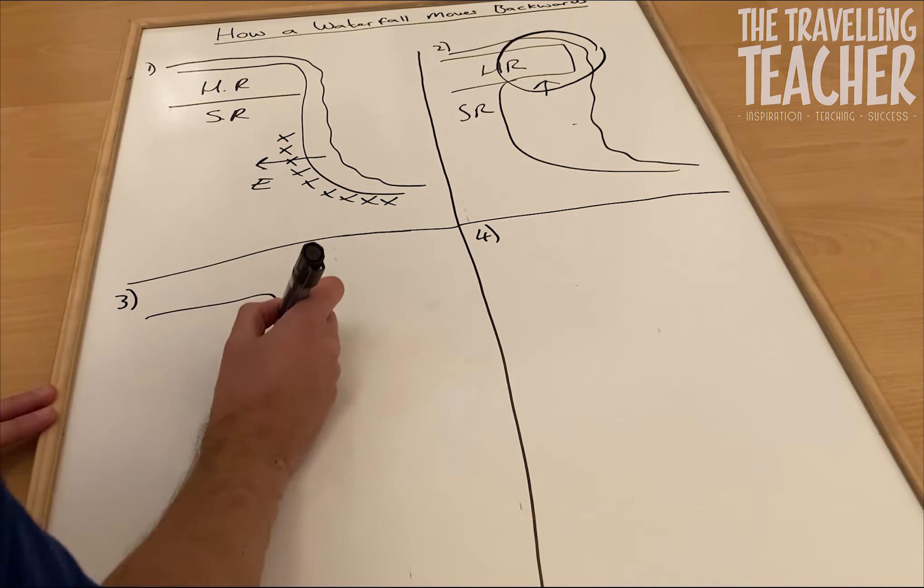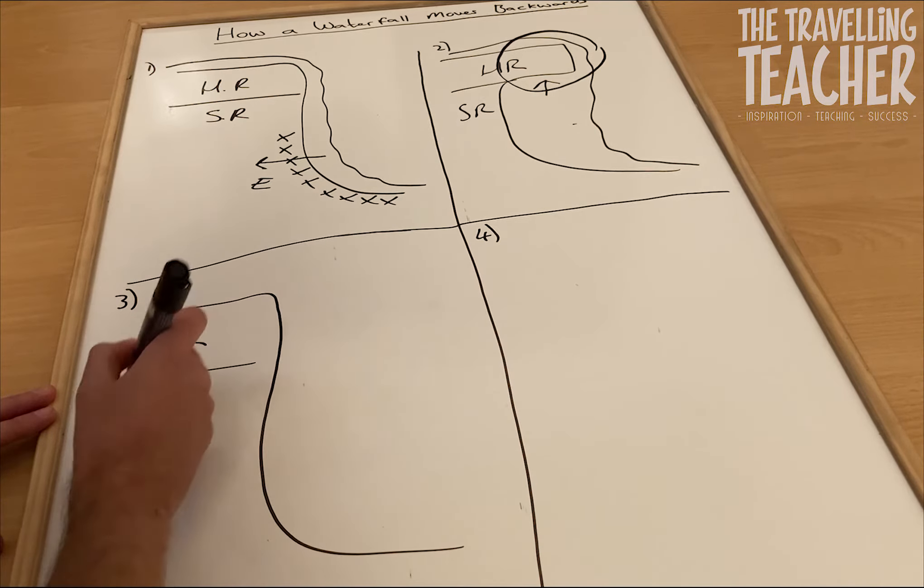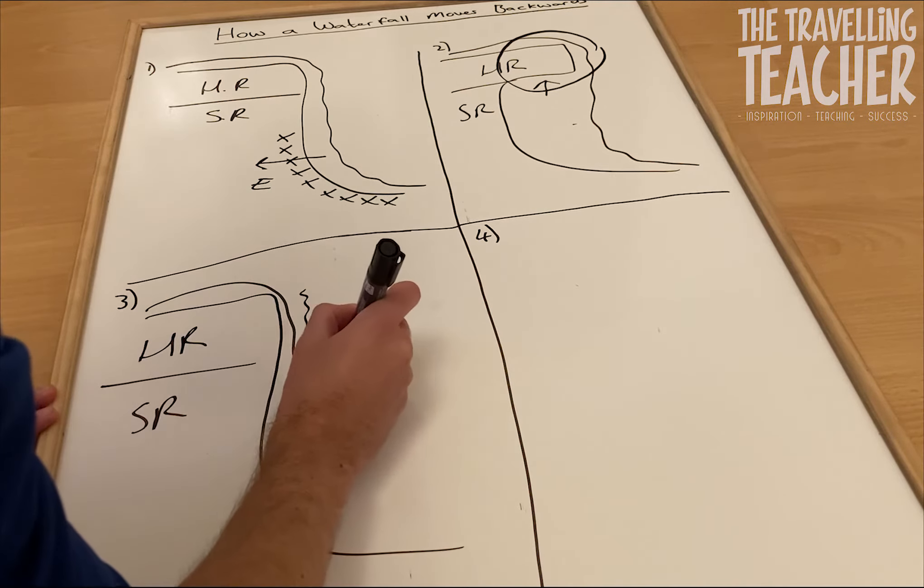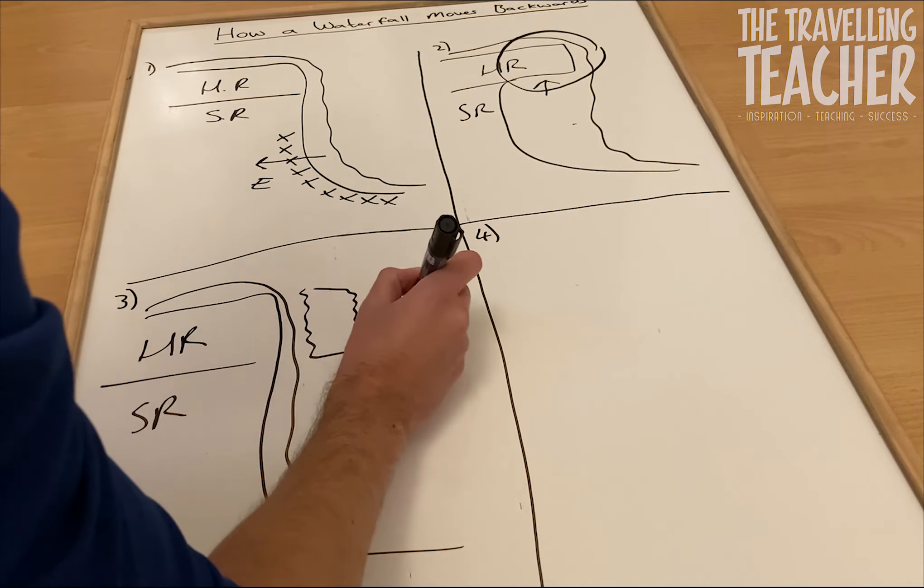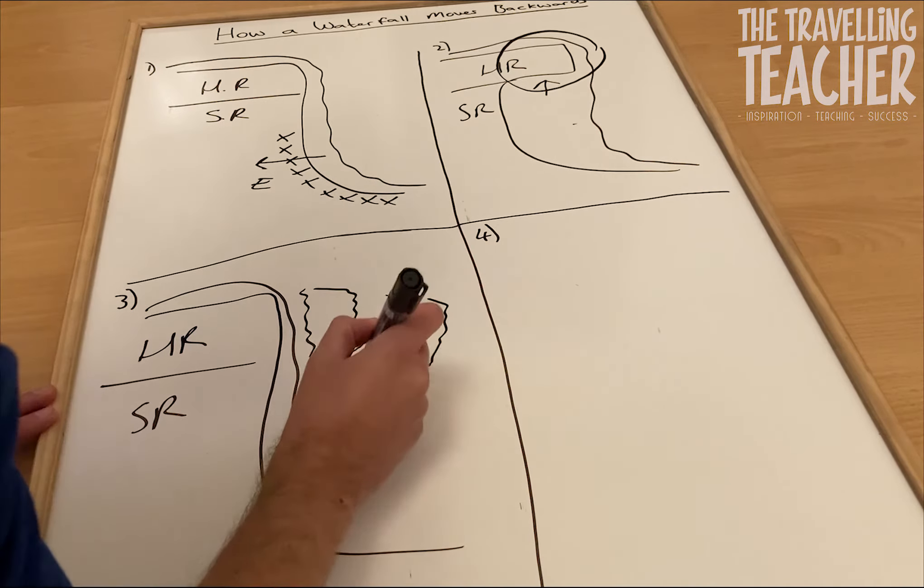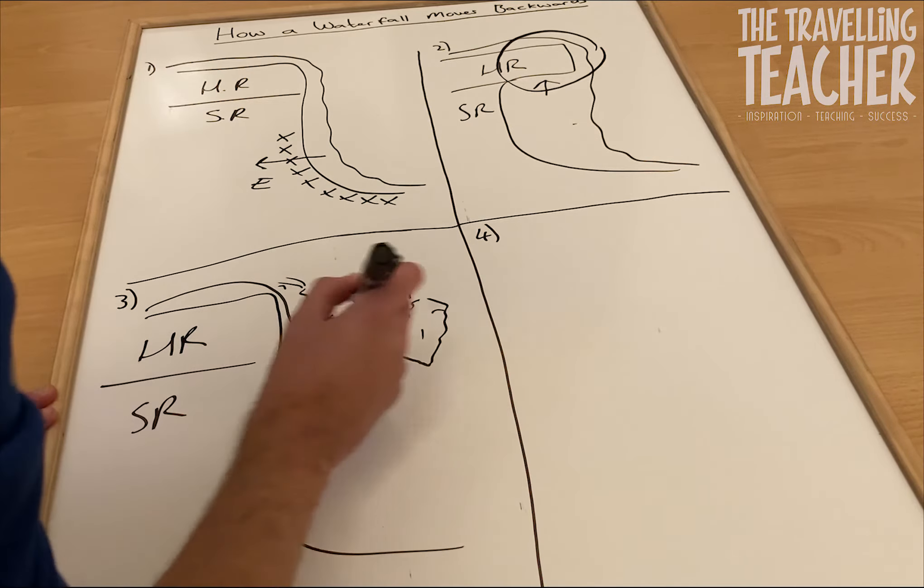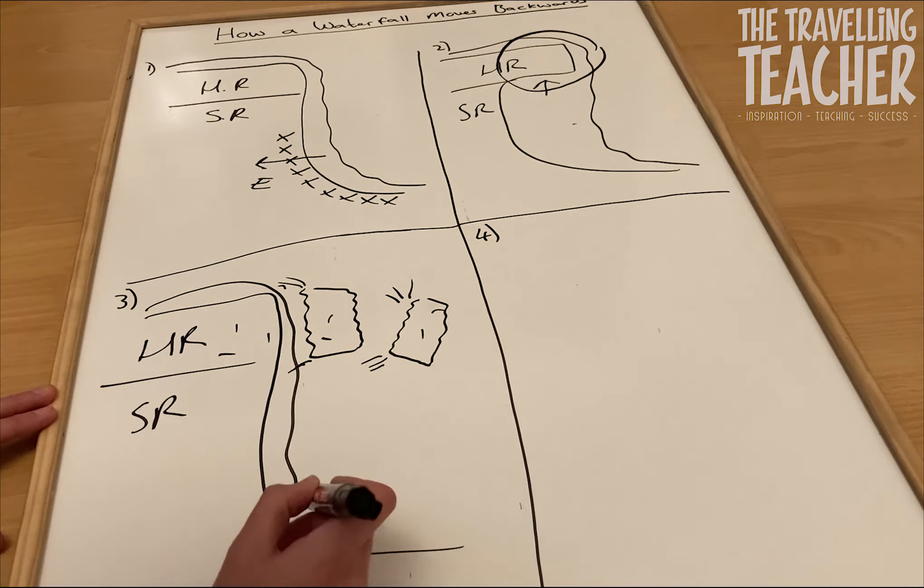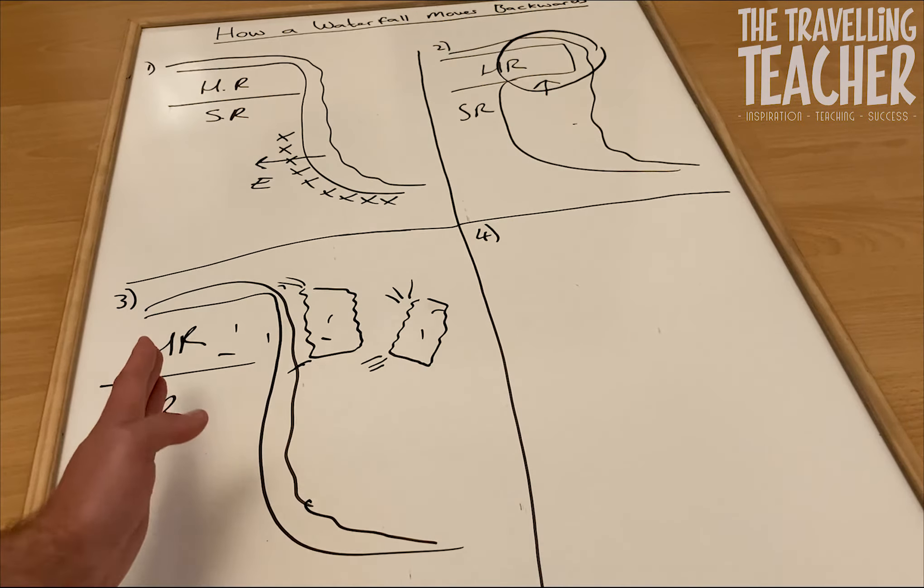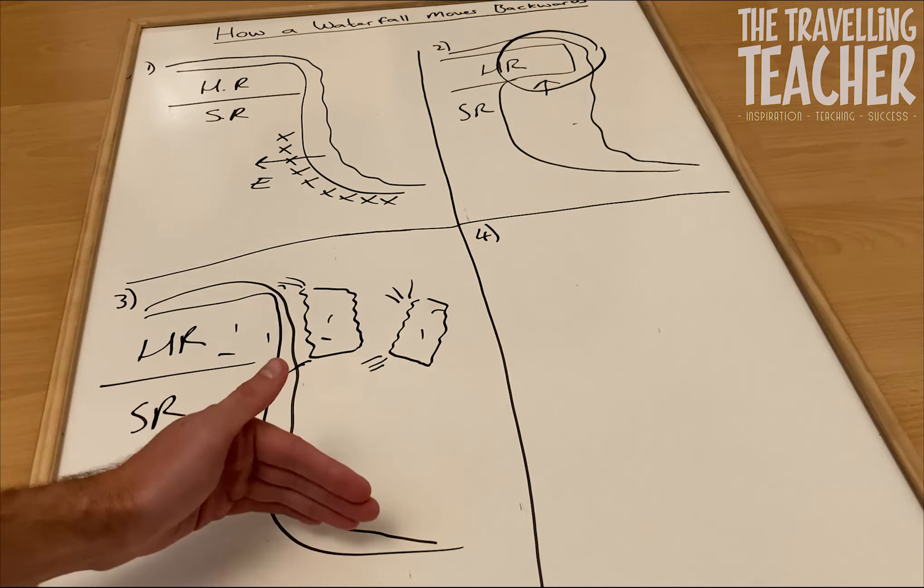So here we go, here's our waterfall again, stage three of the process. Hard rock, soft rock, there's our water flowing through. But this time what we're going to draw on is the hard rock which is departing and falling into the plunge pool. So you've got a lack of support for the hard rock up here in stage two. Over time that hard rock is going to collapse down.